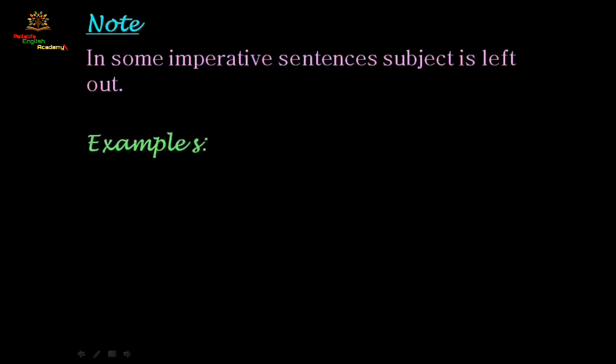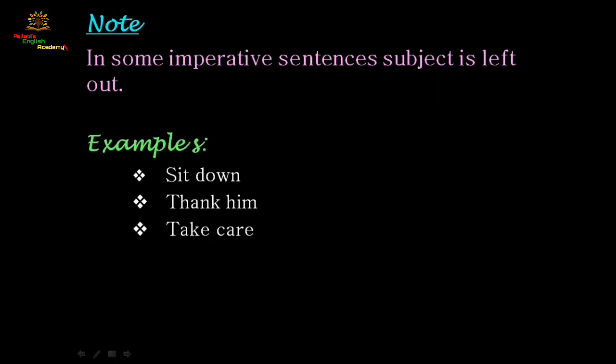In some imperative sentences the subject is left out. Sometimes you will see that in imperative sentences the subject is silent because it is already understood. For example: 'Sit down,' 'Thank him,' 'Take care,' 'Eat your food.' In all these cases, 'you' is implied but omitted. The subject exists but is left out.